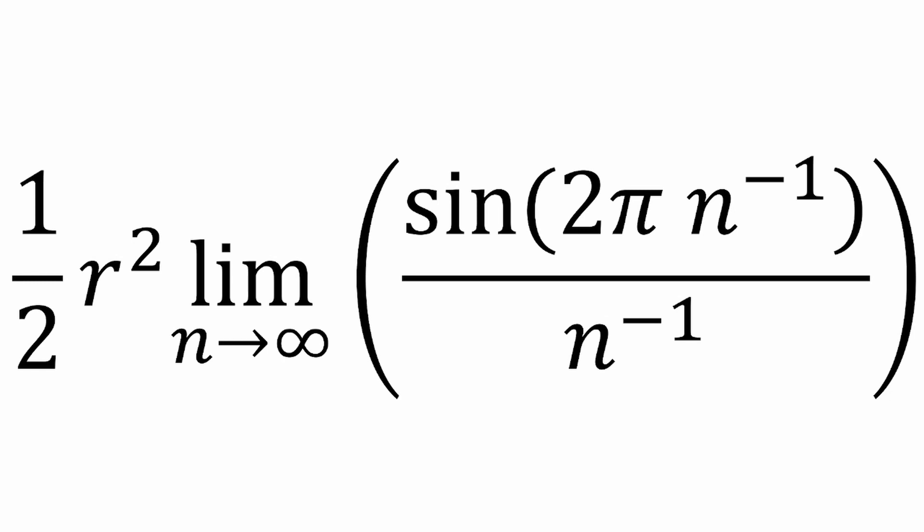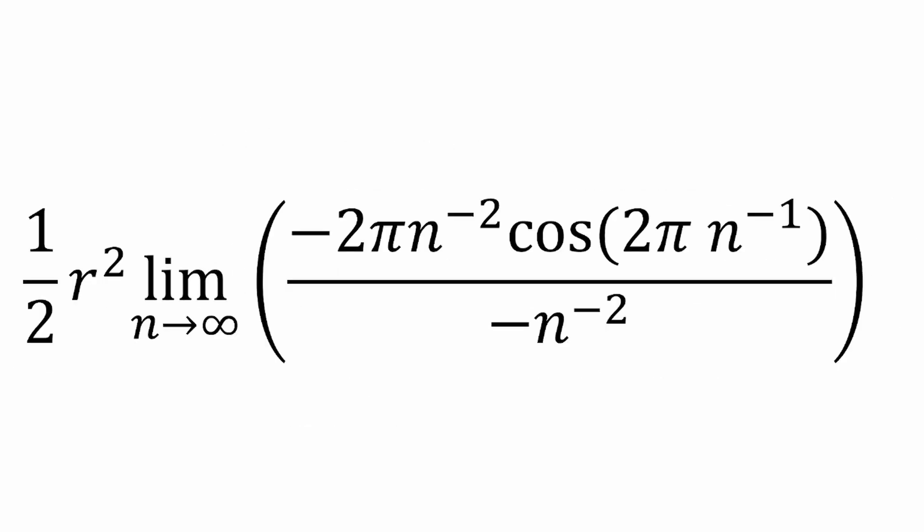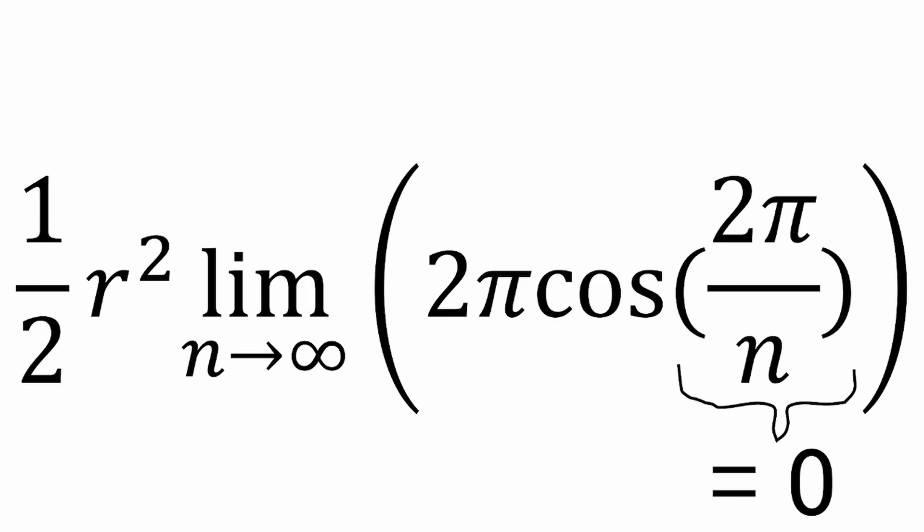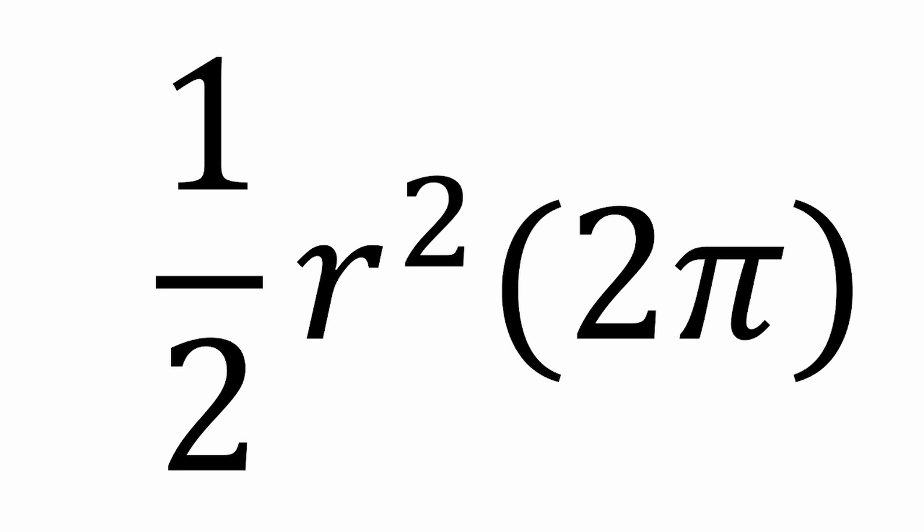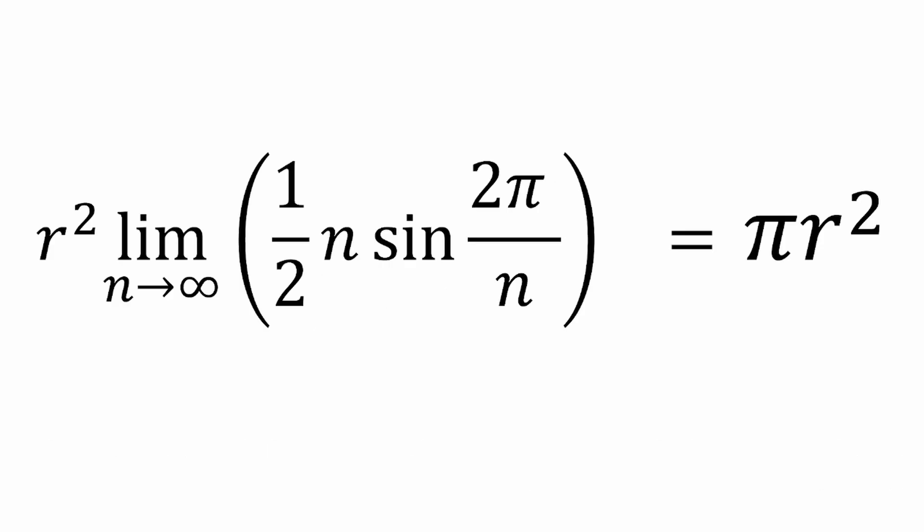Rather than narrate each step, I'm going to show you on screen. Feel free to pause and go over each step if you need more time. What we get is a half r squared multiplied by the limit as n approaches infinity of two pi cos two pi over n. Now, we only have one n, so the limit is straightforward. Two pi over n will approach zero, and cos zero is one. Hence, the limit evaluates to the nice simple expression of a half pi r squared. But wait, that's the formula for an area of a circle. So, we have shown that our expression is correct.